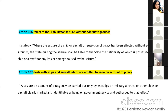Article 106 refers to liability for seizure without adequate grounds. Where a seizure of a ship or aircraft on suspicion of piracy has been effected without adequate grounds, the state making the seizure shall be liable to the state whose nationality the ship or aircraft possesses for any loss or damage caused by the seizure. Article 107 states that a seizure on account of piracy may be carried out only by warships, military aircraft, or other ships or aircraft clearly marked and identifiable as being on government service and authorized to that effect.